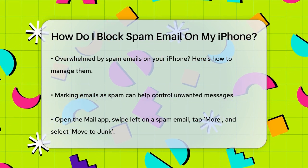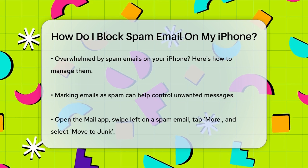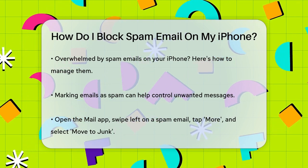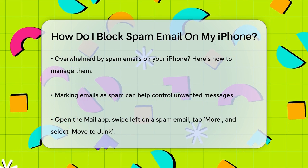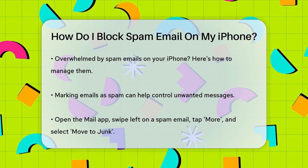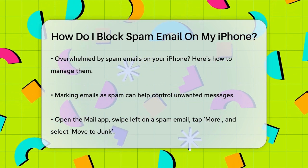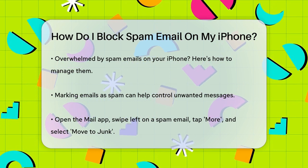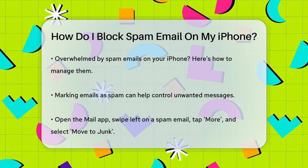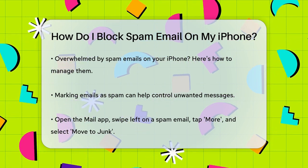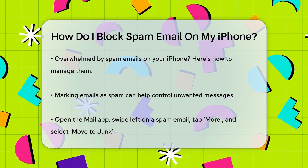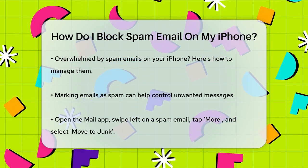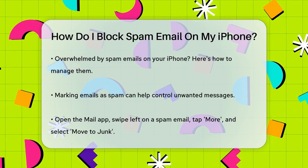First, let's talk about marking emails as spam. When you receive a spam email, you can mark it as spam directly from the Mail app. Open the Mail app, find the email you want to mark, and swipe left on it. Tap More, and then select Move to Junk. This action not only moves the email to the junk folder, but also helps your iPhone's spam filter to recognize similar messages in the future.